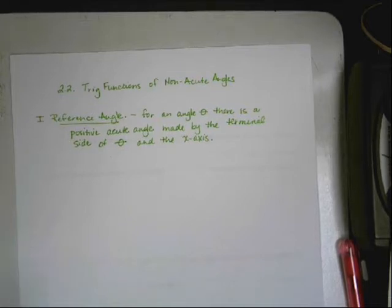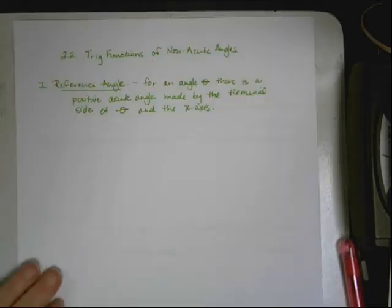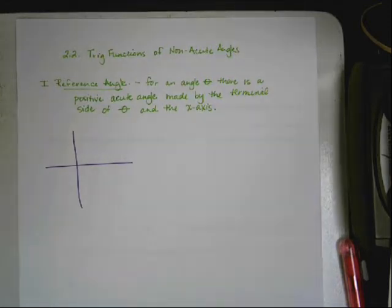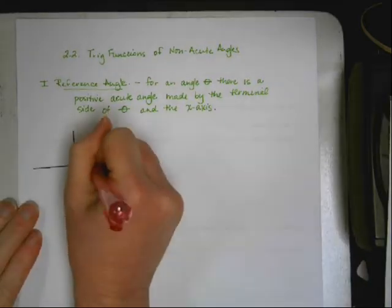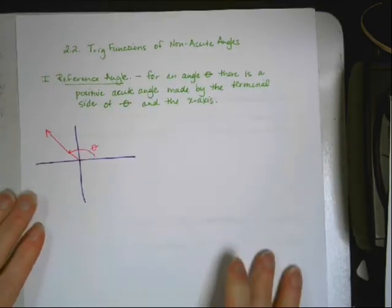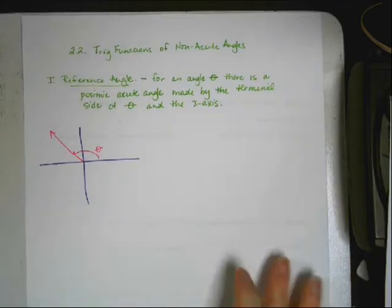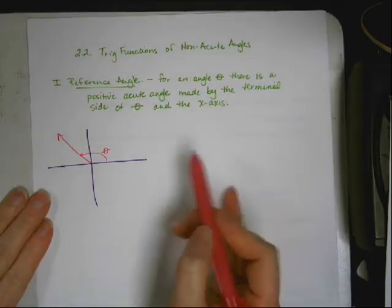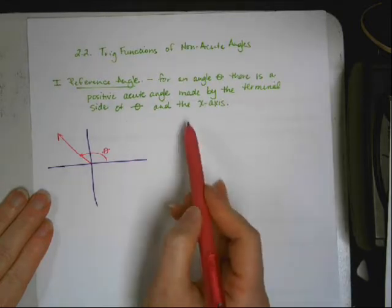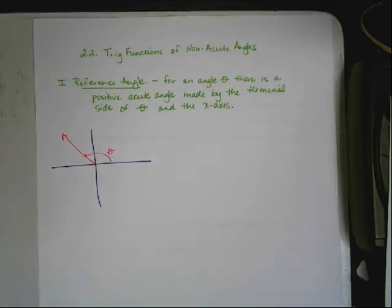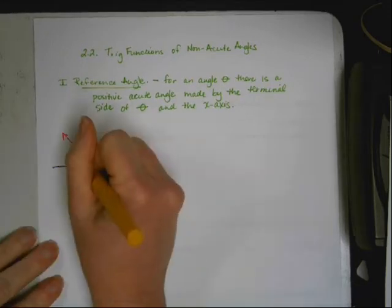So let me show you what I mean. Here's my coordinate grid. And let's say here's my angle. There's theta. So it says for every angle theta, there's a positive acute angle made by the terminal side of theta and the x-axis. So this is actually the angle we're talking about, the pink theta. But the terminal side and the x-axis create an acute angle right here. I'm just going to call that theta prime.